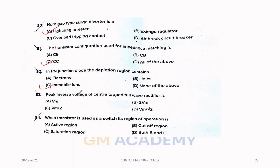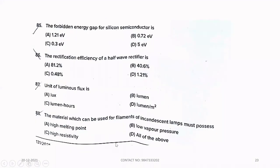Eighty-three. Peak inverse voltage of center tapped full wave rectifier is, option B, 2Vm. Eighty-four. When transistor is used as a switch, its region of operation is, option D, both B and C.